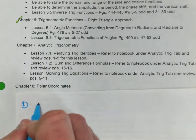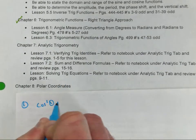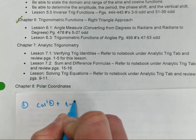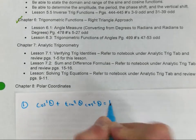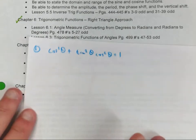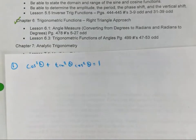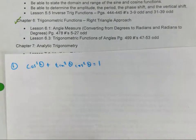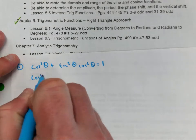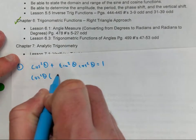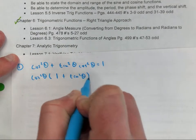Alright, so cosine squared theta plus tangent squared theta, cosine squared theta equals 1. What strategy would you use there? Factor. And I would factor that. So cosine squared theta would be 1 plus tangent squared theta.